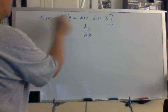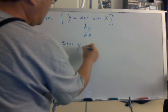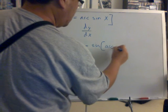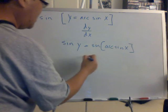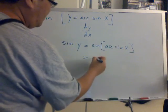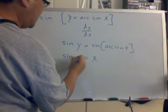You take the sine on the left side and right side, and you have sine of y equals sine of arc sine of x. And you have basically the sine of arc sine, which cancels out, and you have x equals sine of y.